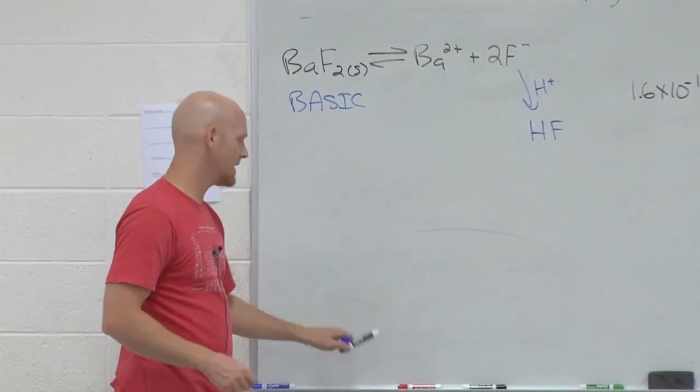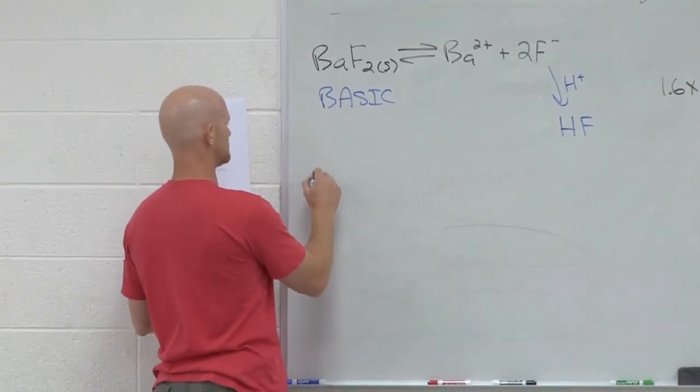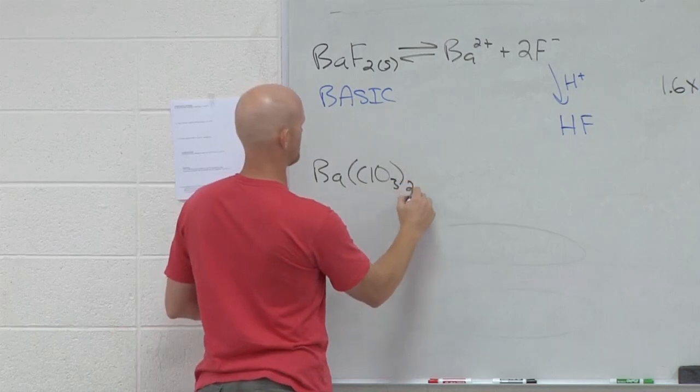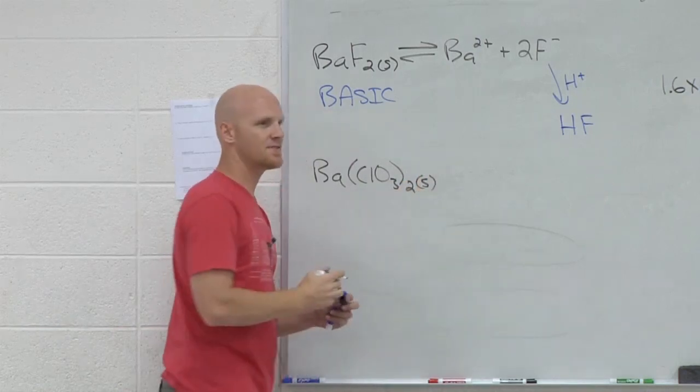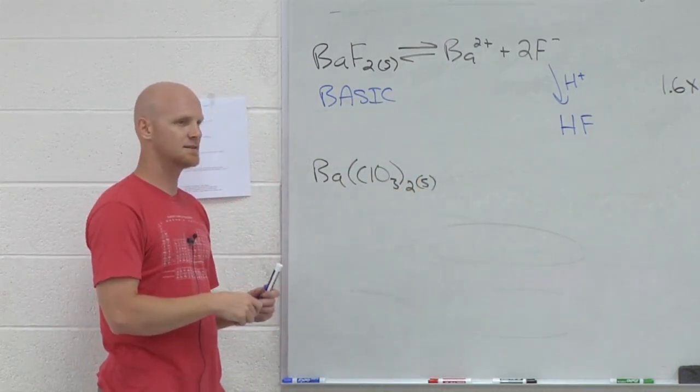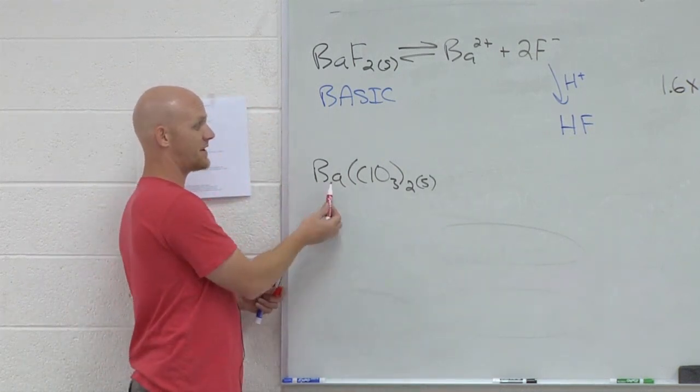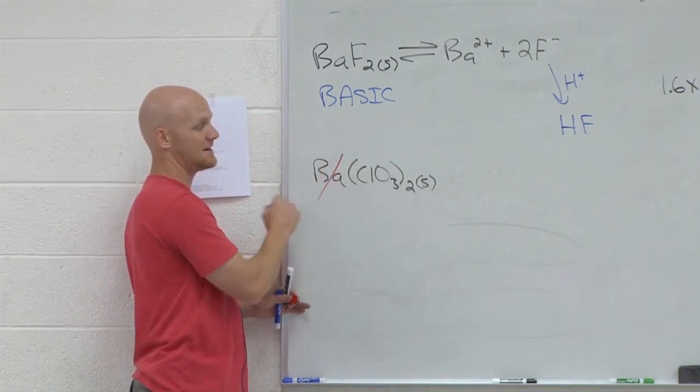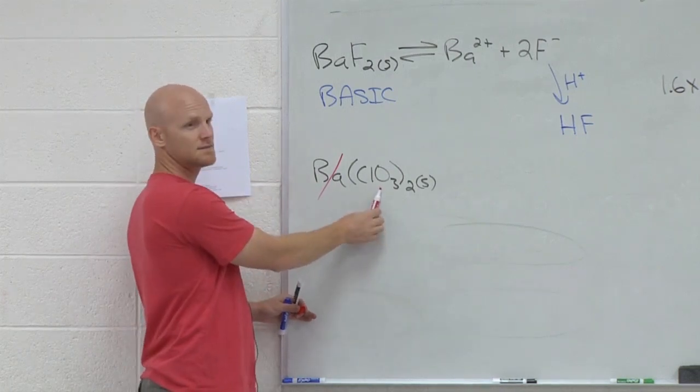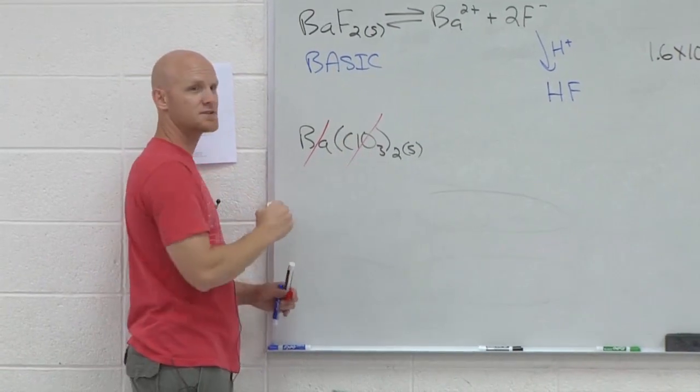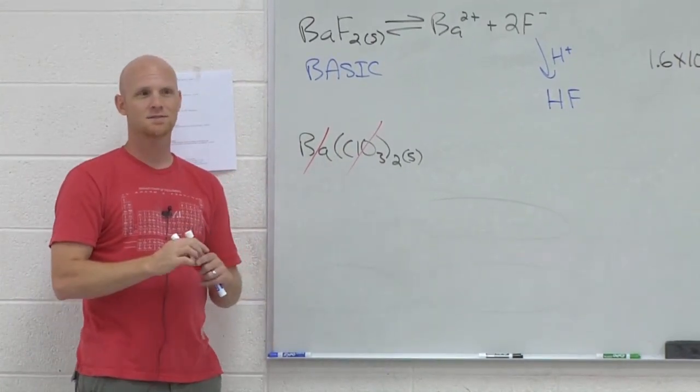Now what if on the other hand I had something like, technically this thing's probably pretty darn soluble, but what if I had this guy? What kind of salt is he? Barium ions are negligible and he comes from a strong acid, so he's negligible. So what kind of salt is this? Neutral.